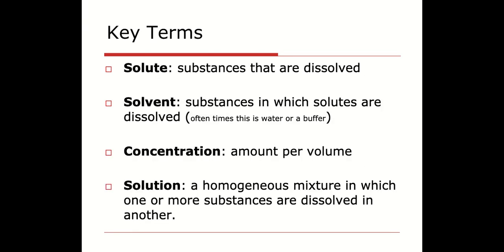So some key terms here that we just want to review from chemistry. Remember we're going to be talking about solutes and solvents. The solute is whatever substance is being dissolved in something else. That can be a solid or a liquid, it doesn't matter. And then the solvent is what is going to do the dissolving. Most often this is going to be a volume of water or even buffer which is mostly water. These are the things that are going to make up your solution. You're going to have solute and solvent mixed together to make your solution.